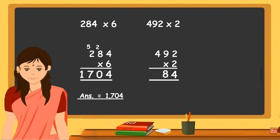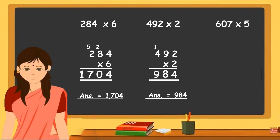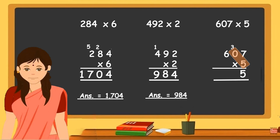Last, solve 607 into 5. First multiply — 5 sevens are 35, so write 5 and carry over 3. Then 5 zeros are 0, plus the carry over 3 is 3 — no carry over here. So multiply 5 sixes are 30. The product is 3035.